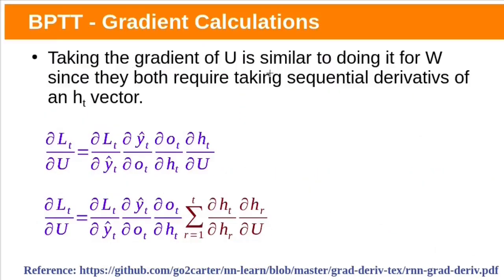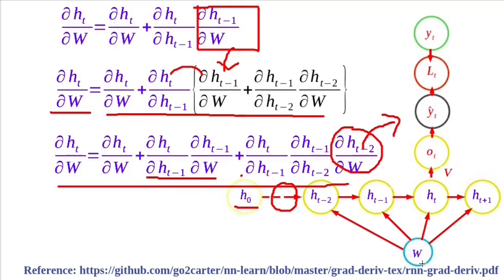Taking the gradient of u is similar to doing it for w, since they both require taking sequential derivatives of the ht vector. You can see here — in place of w, we are simply replacing u. The final gradient for u would follow the same form. The backpropagation algorithm used here is called backpropagation through time, because parameters are shared by all time steps — the same weight w is shared at time step t, time step t-1, and time step t+1. The gradient at each predicted value depends not only on the calculations of the current time step but also on the previous time steps. So this algorithm is called backpropagation through time.